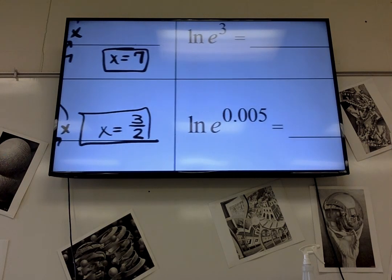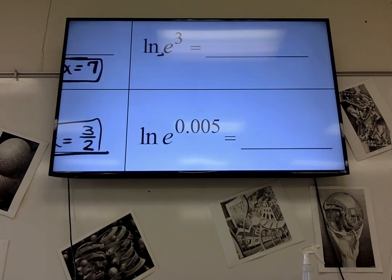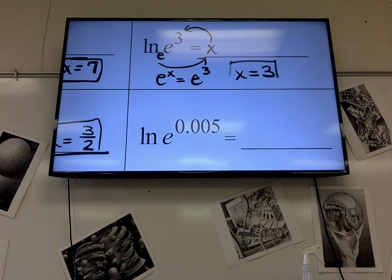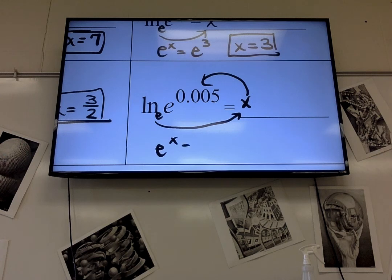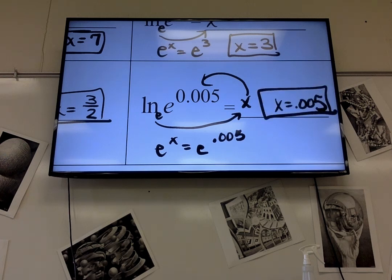It works with natural log too. You just got to remember that natural log is a log base e. So if I did the circle method, it's e to the x equals e cubed. So x is 3. Same thing here. e to the x equals e to the 0.005. So x is 0.005.